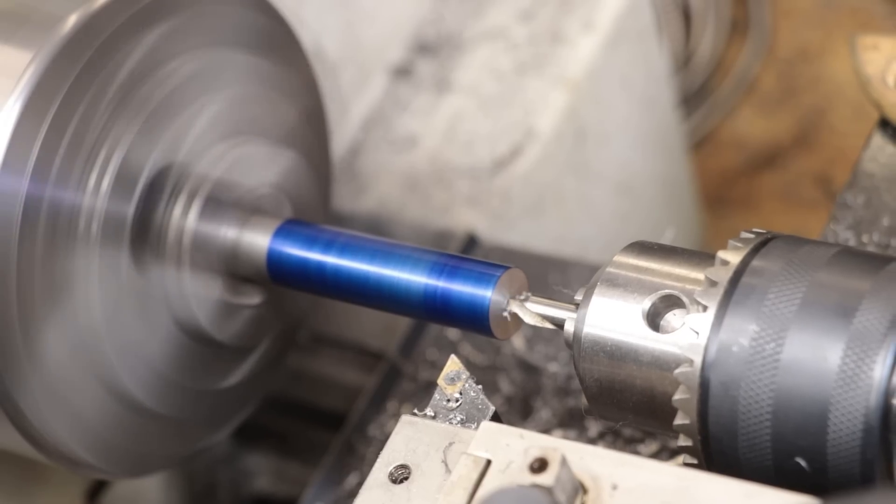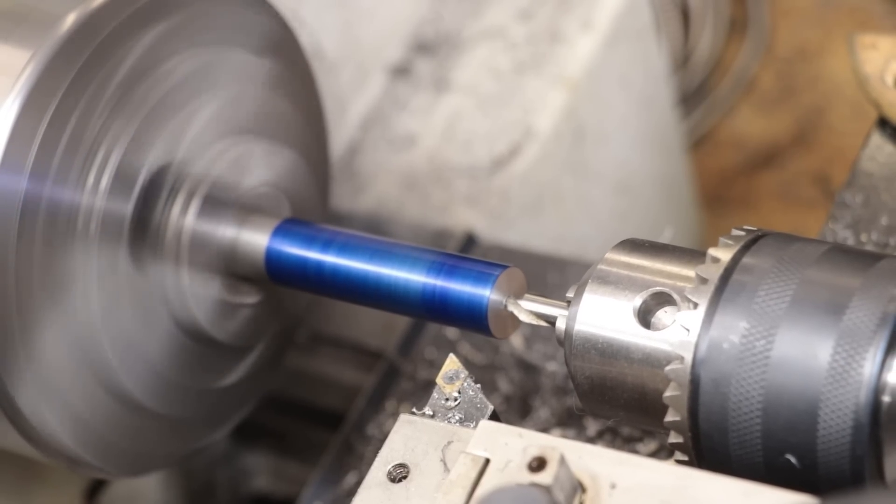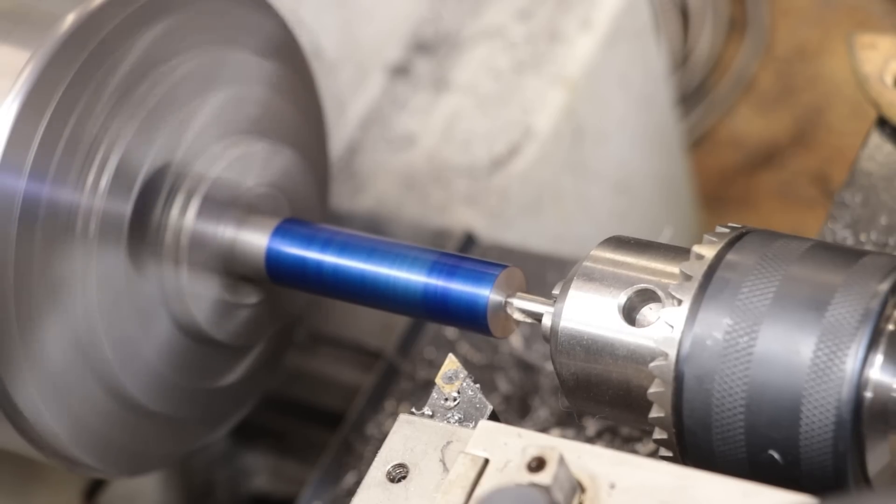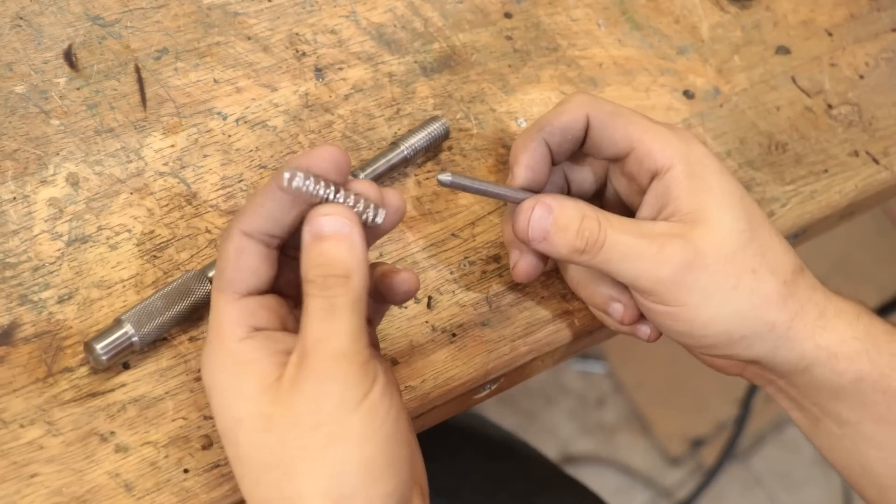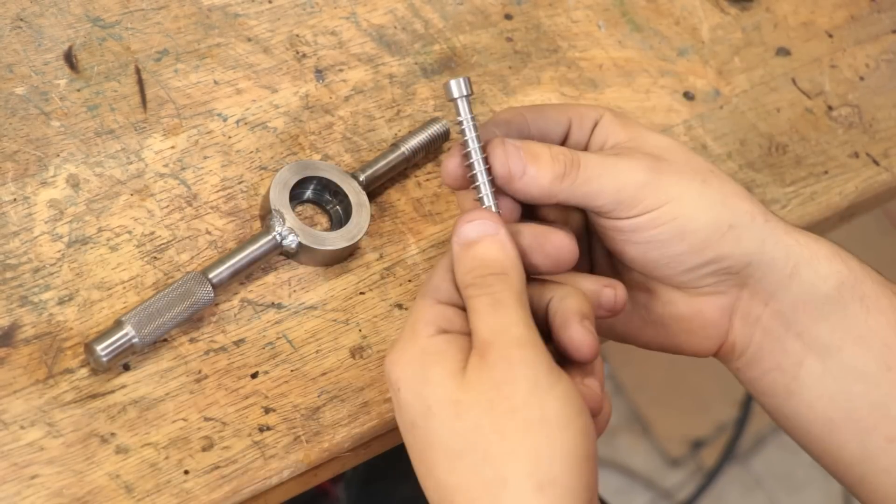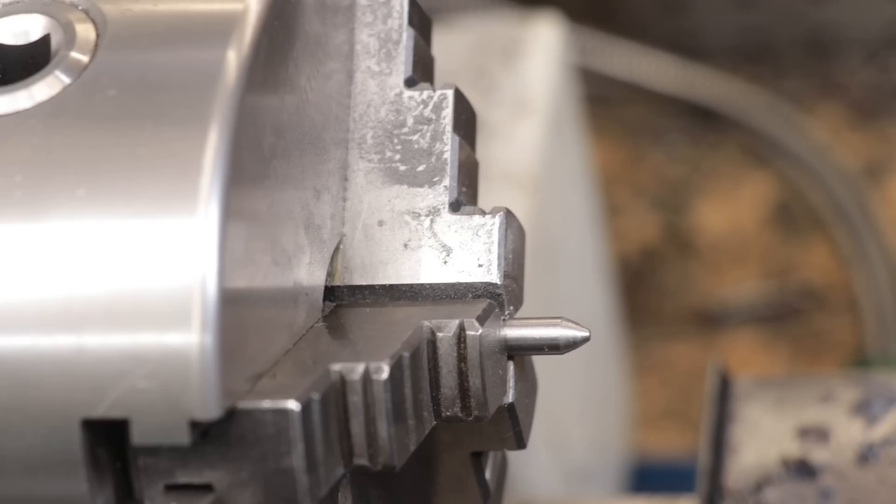To use it, the part needs a matching center hole drilled into the end for the point to locate into. This works for 99% of the things I turn, but I currently need to machine up a set of pins and each pin comes with a convex point. Obviously two points won't locate into each other.